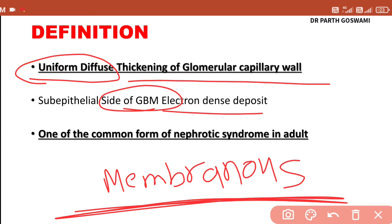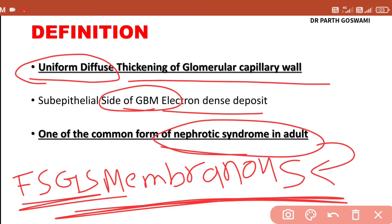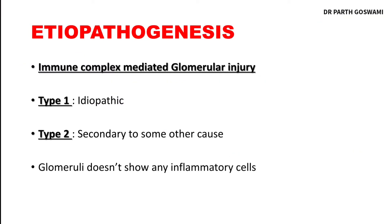The most common type of nephrotic syndrome in adults is focal segmental glomerulosclerosis, and at the second number, the second most common cause of nephrotic syndrome in adults is membranous nephropathy.